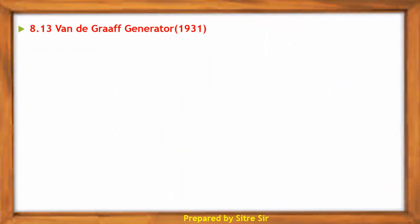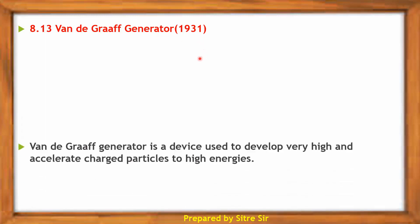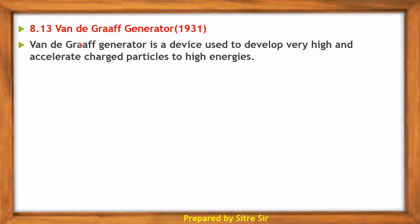Next point is Van de Graaff generator. The scientist Van de Graaff developed one instrument in 1931. That instrument is known as the Van de Graaff generator, and this generator is a device used to develop very high energy and to accelerate charged particles to high energy.